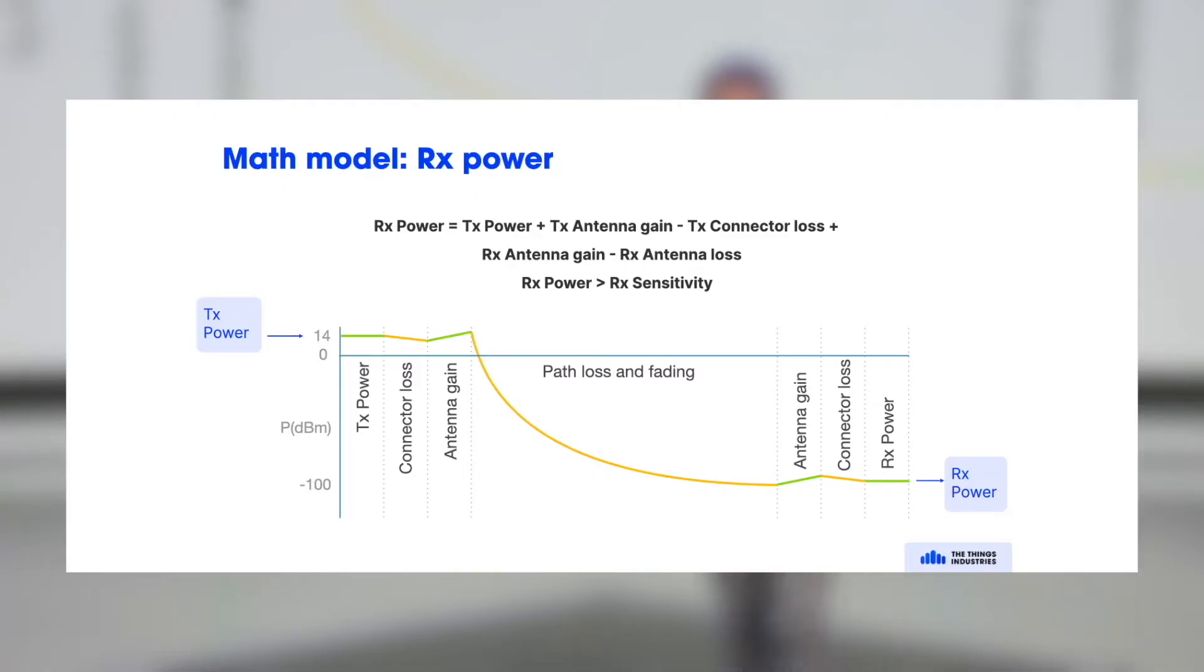Now here you have the overview. On the left you see the transmission power, that's in dBm. On the right side you see the RX power, so that's on the receiver side.